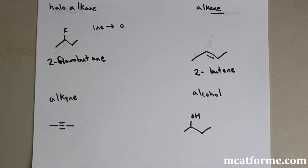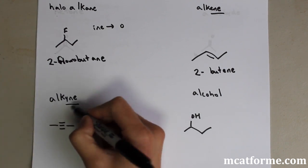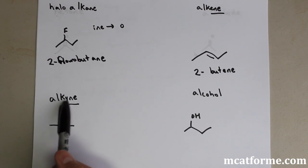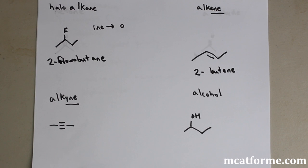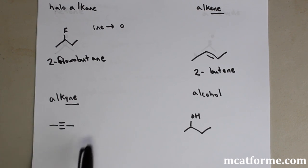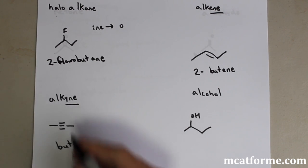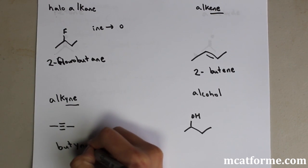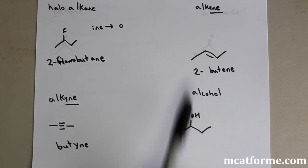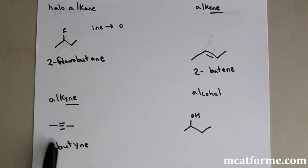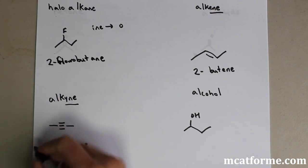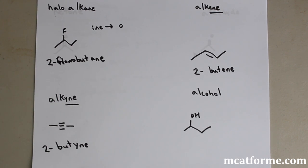Now we're looking at alkynes — a triple bond. Similarly to alkane and alkene, for alkyne we change the ending to '-yne'. We have four carbons: one, two, three, four — so the prefix is 'but'. The ending is '-yne'. And we need to know where the triple bond is — it could be on carbon one, two, three, etc. So it's 2-butyne.